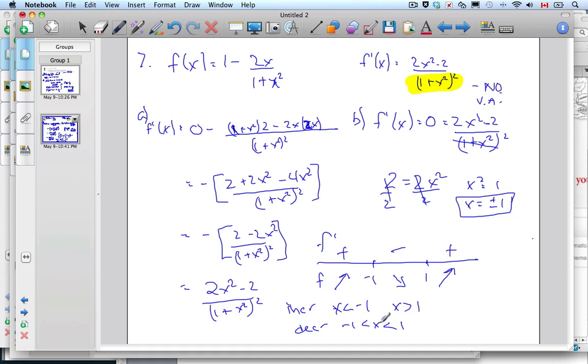Part c says find the maximum coordinate. We actually have to find the value. Looking at this sign chart, I know the graph is going to be doing this kind of scenario.